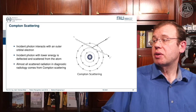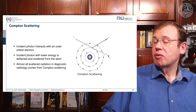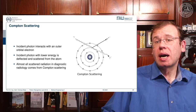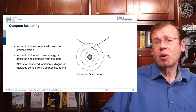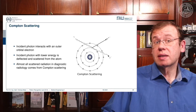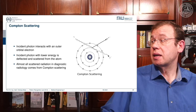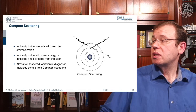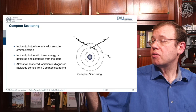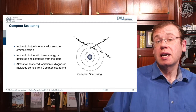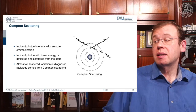Compton scattering is an interaction that happens when a photon interacts with an outer orbital electron. The incident photon is deflected and scattered from the atom with lower energy, while the electron is ejected. Almost all scattered radiation in diagnostic imaging comes from Compton scattering. The photon continues in a different direction with a longer wavelength — meaning reduced energy — and Compton scattering is the main cause of absorption inside the human body.